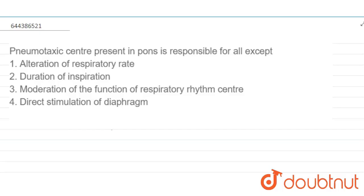The question says that pneumotoxic center, which is present in pons, is responsible for all except option number one: alteration of respiratory rate; second: duration of inspiration; third: moderation of the function of respiratory rhythm center; and fourth: direct stimulation of diaphragm.